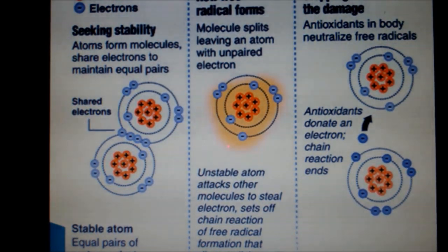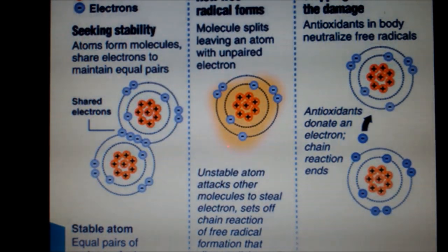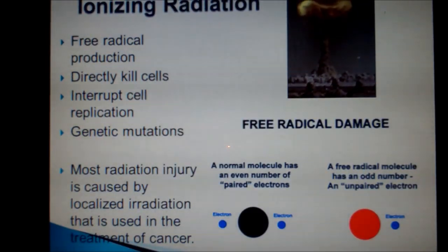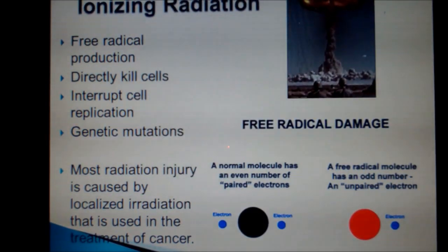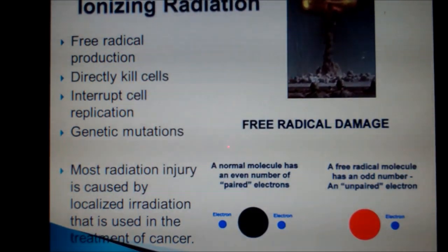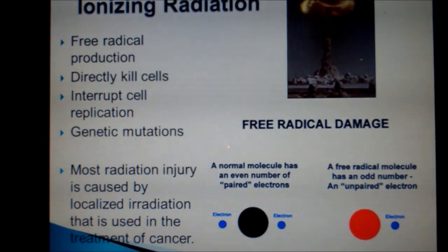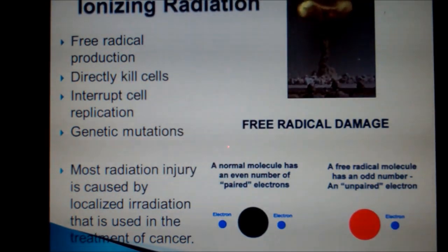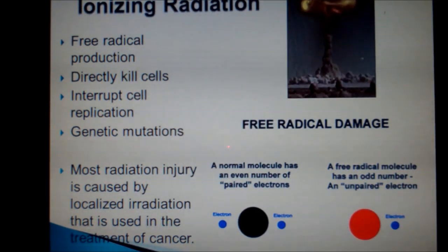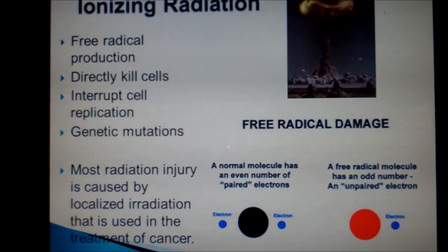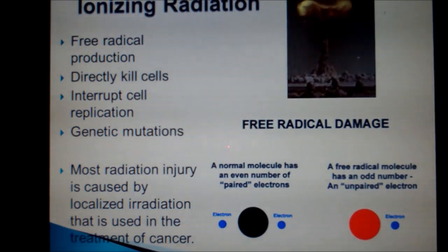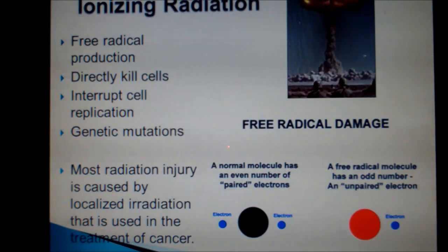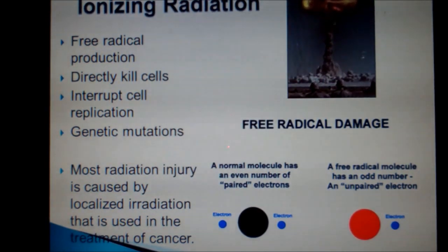Likewise, a free radical has an unpaired electron and desperately tries to fix the problem by colliding with other molecules and stealing their electron. Another way to look at it is to picture a whole class of 50 students with only 49 chairs. The professor declares there is an exam worth 70% of your grade, but you have to sit in a chair to take the test. Imagine the anarchy — that's free radicals.